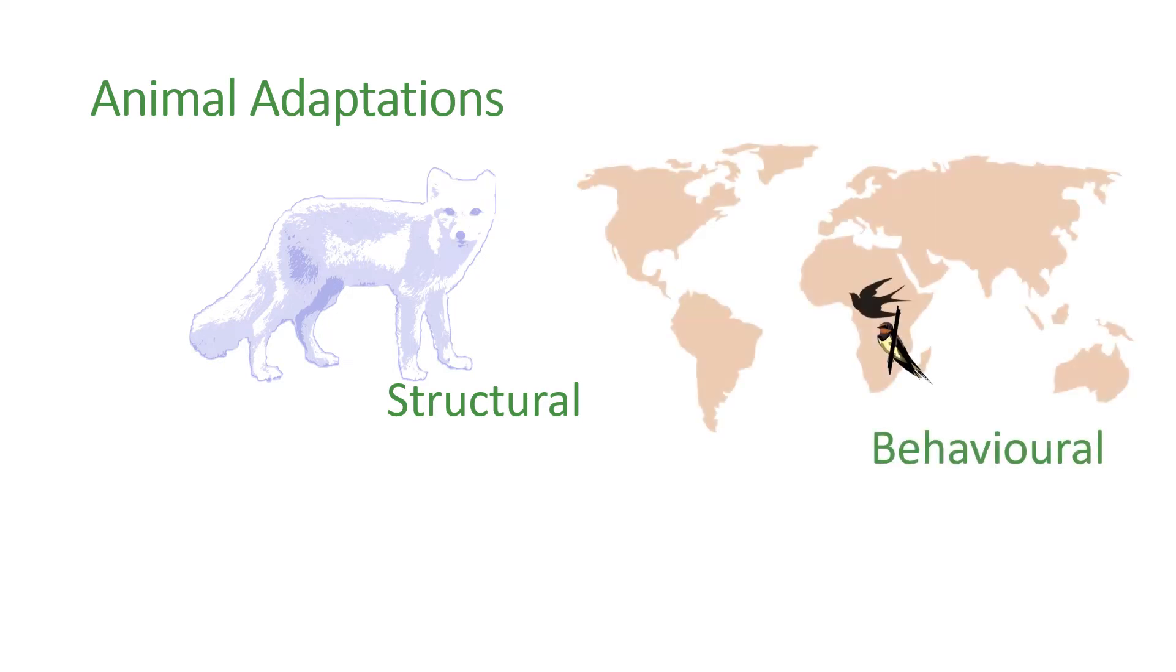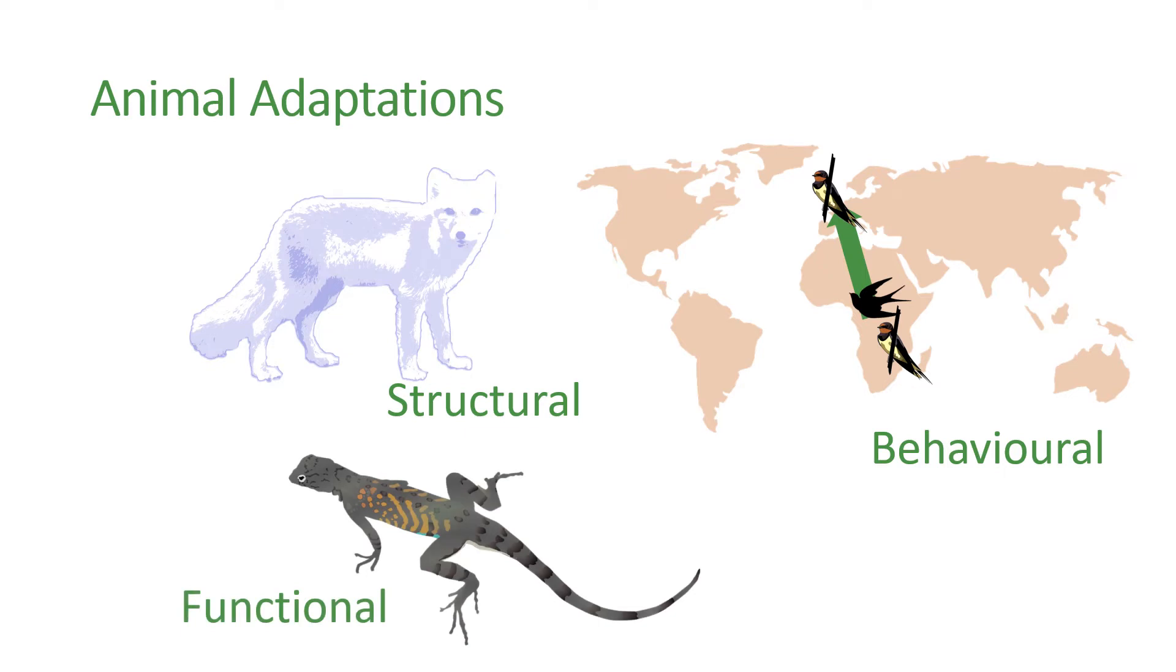Examples of animal adaptations include structural adaptations like camouflage fur, behavioral adaptations like migration from one area to another, and functional adaptations like the adaptation of kidneys in animals that live in desert conditions.